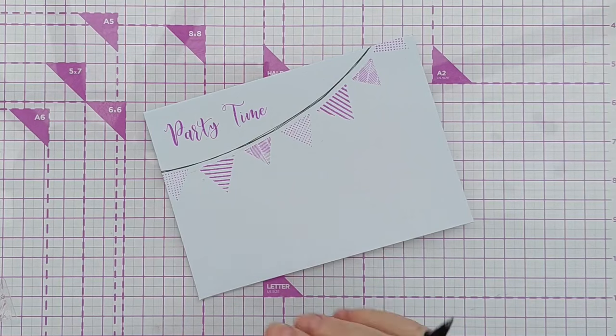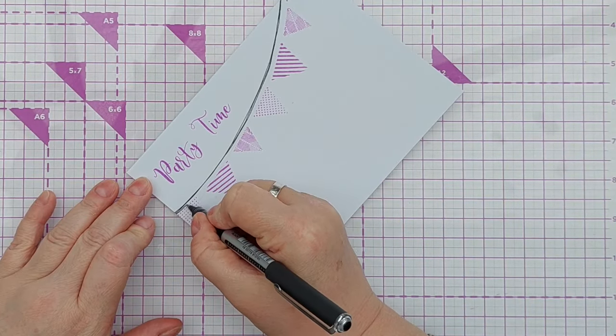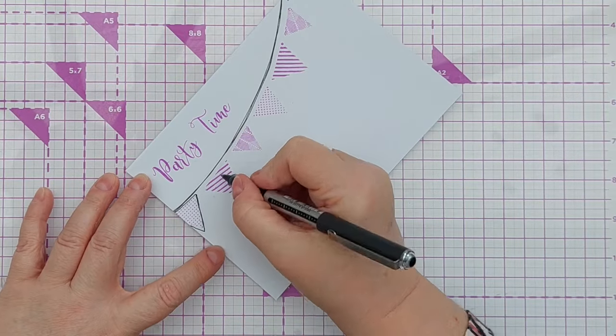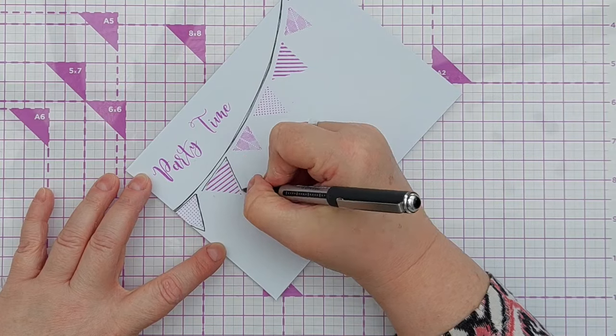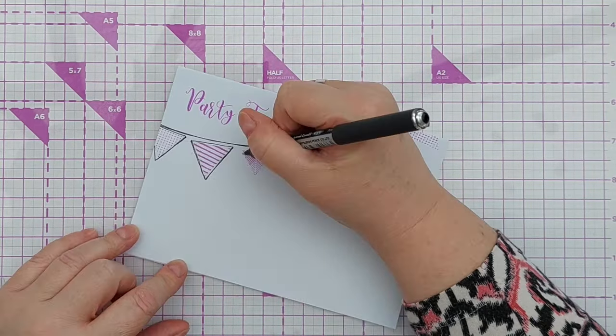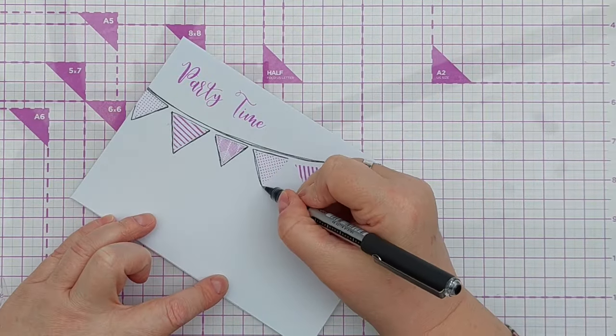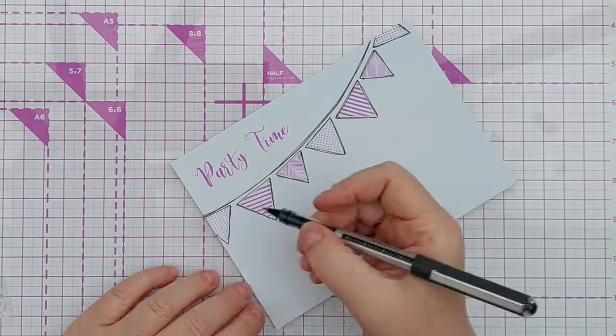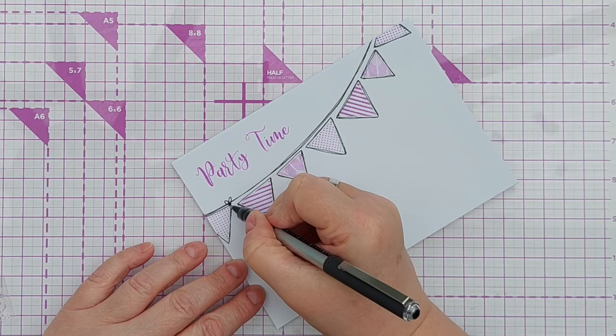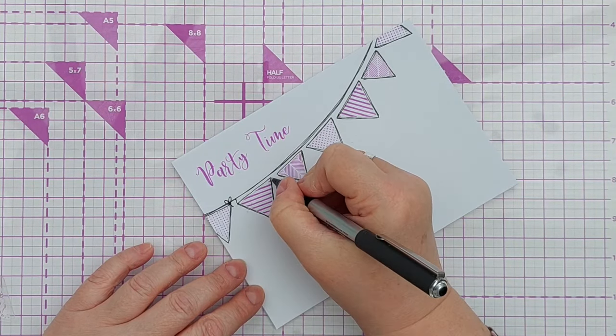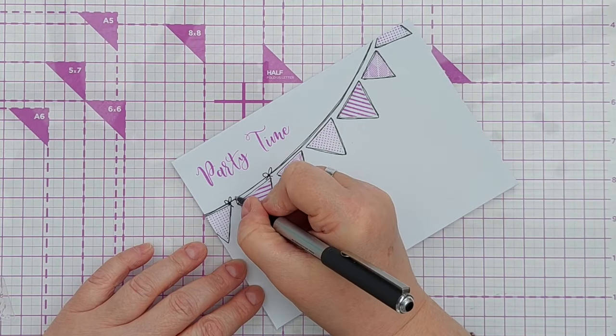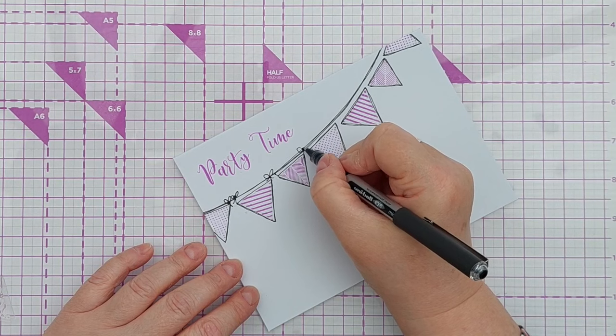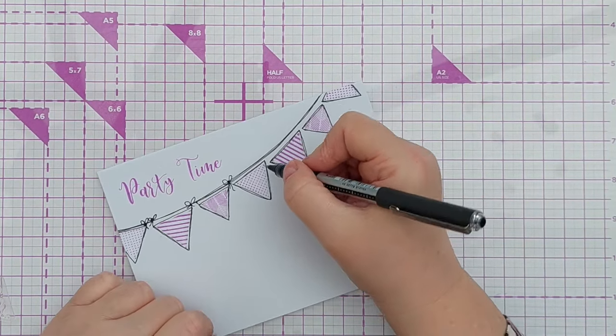You could leave it like that if you wanted, but I'm going to actually draw around my triangle banners with my black pen and I'm going to do a couple of lines around each to mimic that wobbly line up there. Each bit of bunting is going to get a bit of string and a bow. Sometimes the bow might be connected to the next bit of bunting.